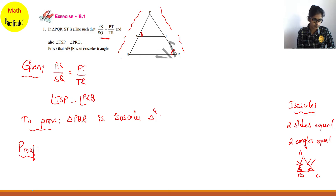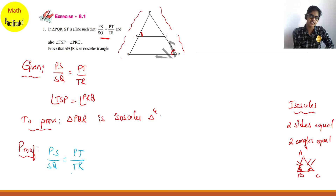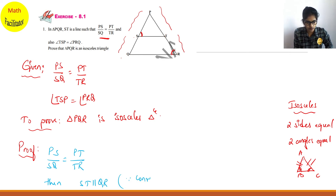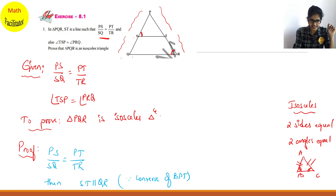I gave you a clue — this is about the converse of BPT. It is given that PS/SQ = PT/TR. When a line is dividing the other two sides in the same ratio, then ST is parallel to QR. Using the converse of BPT: if a line divides two sides of a triangle in the same ratio, then the line is parallel to the third side, which here is QR. So ST is parallel to QR.